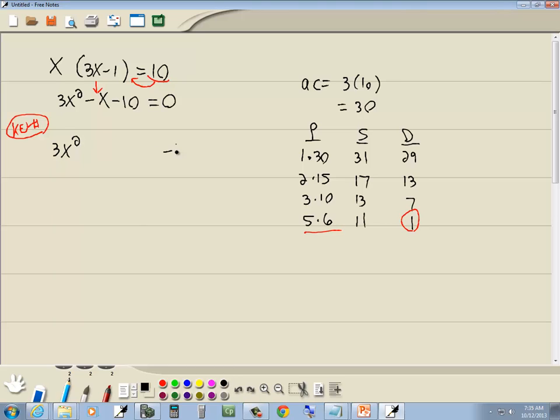Now, remember, we're going to rewrite our middle term using those two numbers. Now, our larger number that we're using in the P column, which is a 6, will always be the same sign as the middle term, which is negative. So we've got negative 6x. The number in our circle is in the difference column, D for different signs. So if the 6 is negative, then the 5 has to be positive.